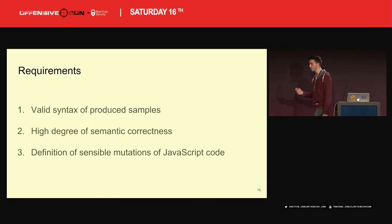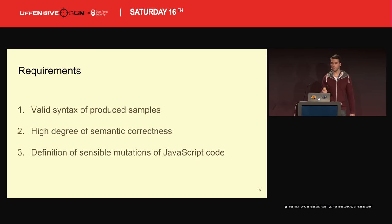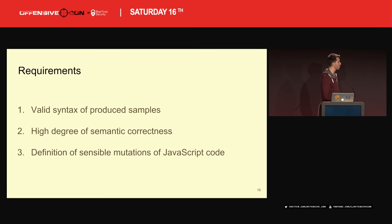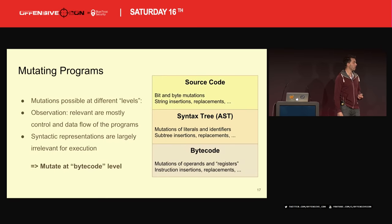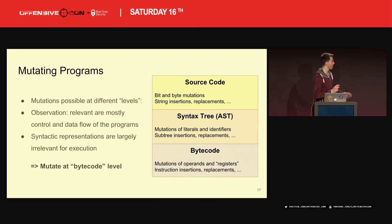The final requirement is: we need mutations for JavaScript code. A mutation-based fuzzer needs some kind of way of mutating inputs. Bit flipping is probably not super effective — we run into the syntactic correctness problem again. So let's try to figure out sensible mutations to JavaScript code or source code in general. This is also not a new research topic — people are already mutating source code.